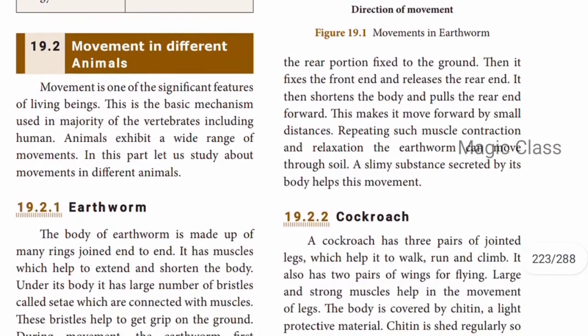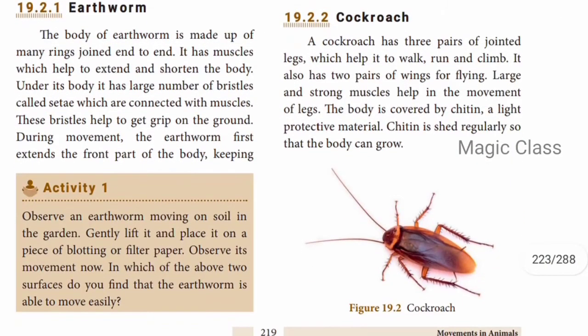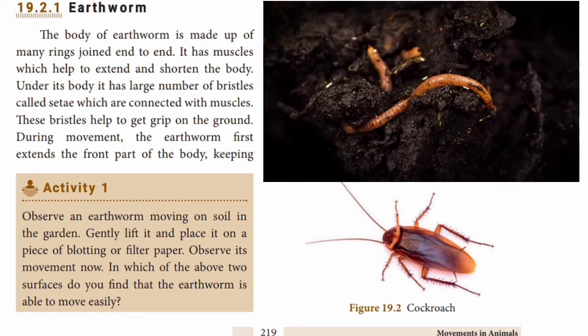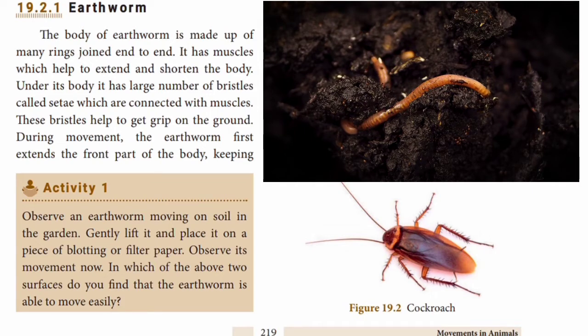Next is movement in different animals. Different animals have different types of movements in different body parts. Movement is one of the important features of living beings and is the basic mechanism used in the majority of vertebrates including humans. First, let's look at the earthworm. The body of the earthworm is made up of many rings joined end to end.